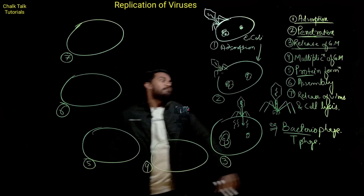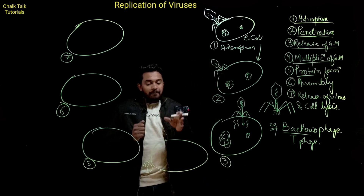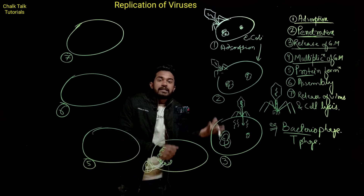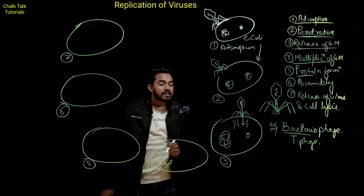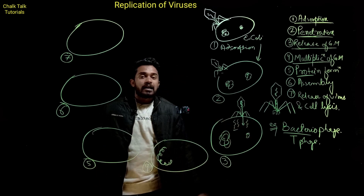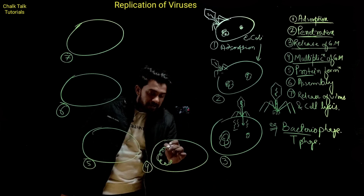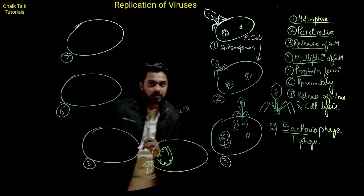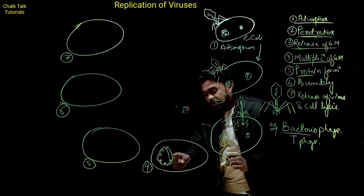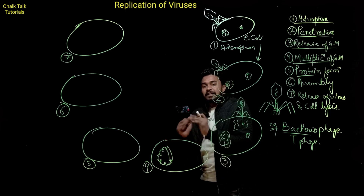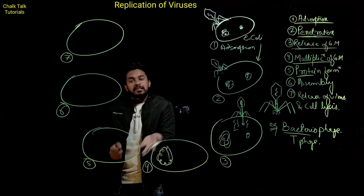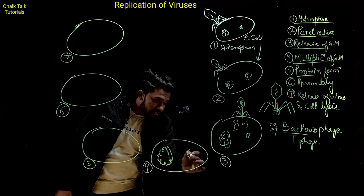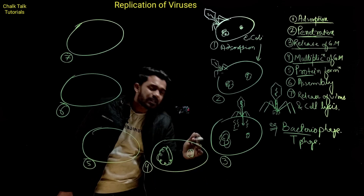अब fourth step है multiplication of genetic material। एक bacteria है, उसके पास अपना genetic material था जो वो divide कर रहा था। जब virus का genetic material आया, वो इसके DNA के साथ embedded हो जाएगा, जुड़ जाएगा। जब इसके DNA के साथ जुड़ गया, तो यह इसके DNA के साथ replicate करेगा, बहुत सारी copies बना लेगा। यह था multiplication of genetic material। हो सकता है कि यह इसके plasmid में भी जुड़ जाए।